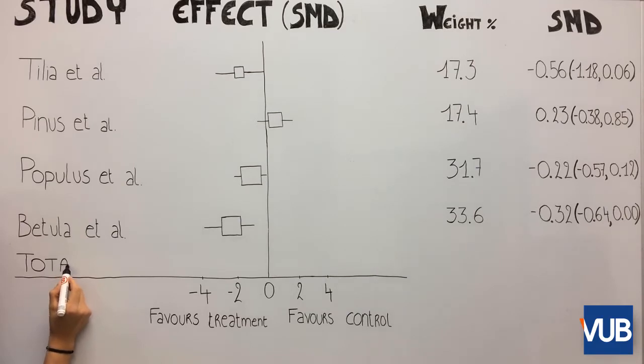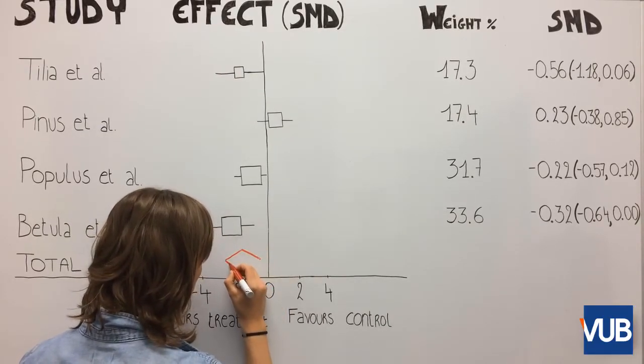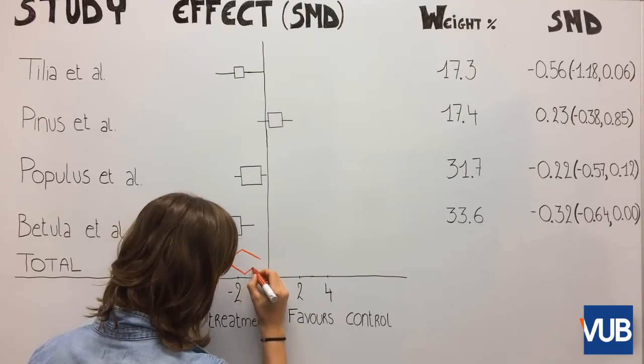At the bottom of the forest plot, the pooled effect is presented. This is the effect of all the studies put together. A pooled effect is different from a mean effect because it considers sample size and variance of the study.